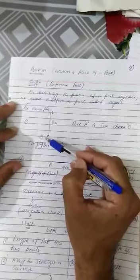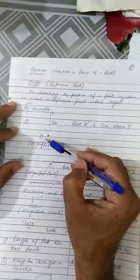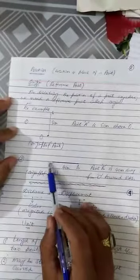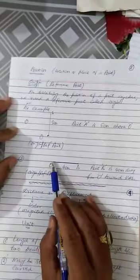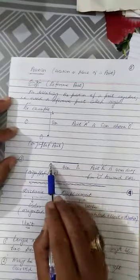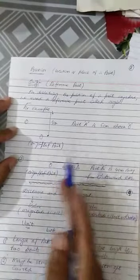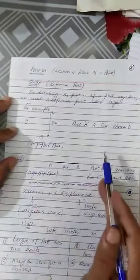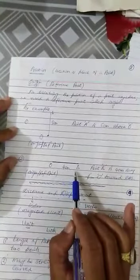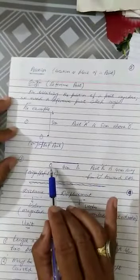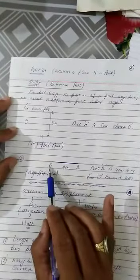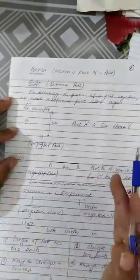That's why O is called the reference point or origin point. Second example: we are describing the position of point B. Point B is four centimeters away from O towards the right-hand side. So you are describing the position of point B towards the right side, using O as the reference point.